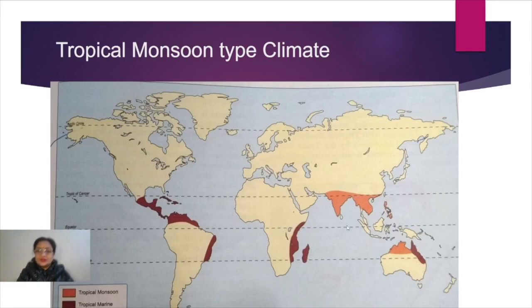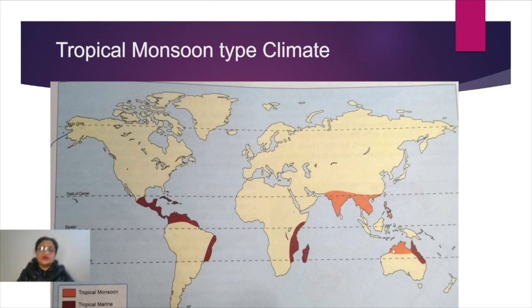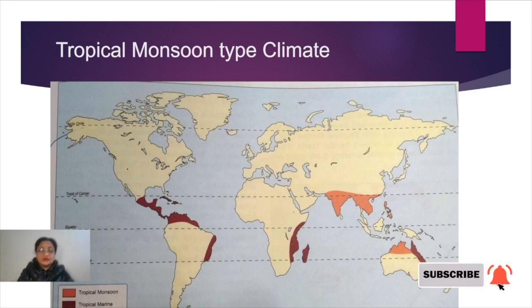The region under tropical monsoon type climate includes a major part of the Indian subcontinent, Bangladesh, Sri Lanka, Myanmar, southern China, Cambodia, Laos, Thailand, Vietnam, islands of Hainan, Taiwan, Philippines, and the extreme northern parts of Australia. It has got the name from its tropical location and monsoon influence — that's why it's called the tropical monsoon type climate.